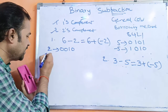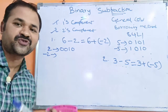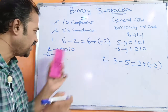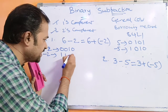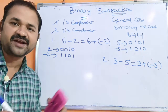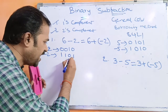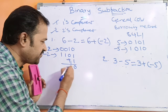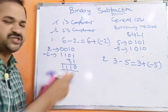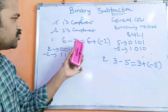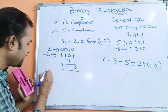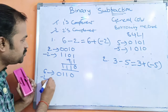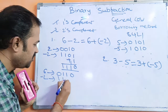To get minus 2 in two's complement: two's complement equals one's complement plus 1. The one's complement of 0, 0, 1, 0 is 1, 1, 0, 1. Adding 1: 1 plus 1 is 0 with carry, 0 plus 1 is 1, giving 1, 1, 1, 0. So 6 minus 2 means adding 0, 1, 1, 0 and 1, 1, 1, 0.